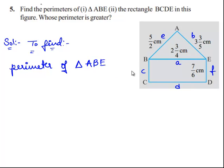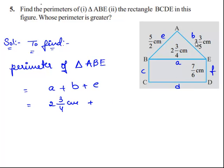Perimeter of a triangle is equal to the sum of all the sides of the triangle. Therefore, perimeter of triangle ABE is the sum of all its sides, that is A plus B plus E. As given in the figure, the length of side A is 2¾ centimeters, the length of side B is 3⅗ centimeters, and the length of side E is 5/2 centimeters.